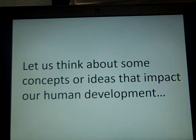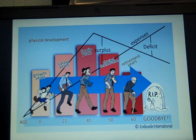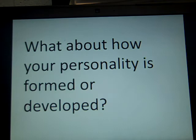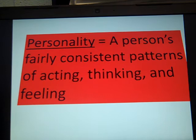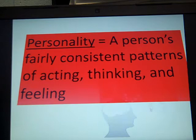So let's think about concepts or ideas that impact our human development. We know there are physical components, but what about personality? This class is all about personality. So how are our personalities formed or developed over time? Your personality — a definition you've had before — is your consistent pattern of acting, thinking, and feeling: behaviors, thoughts, and emotions. There are different ways to think about how we develop in terms of personality.